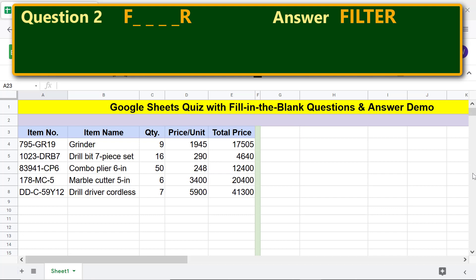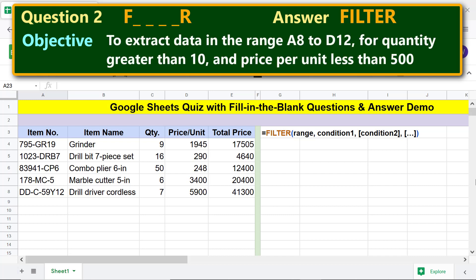Demo: here is the filter function formula. The objective is to extract data in the range A8 to D12 for quantity greater than 10 and price per unit less than 500. I will type the formula specifying the range, condition 1, and condition 2.